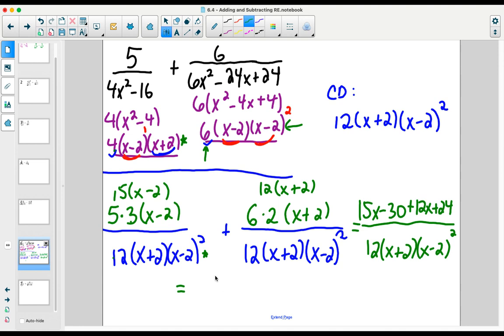Combining in the numerator, the common like terms, we have 27x minus 6 over 12(x+2)(x-2)².